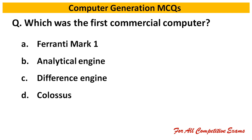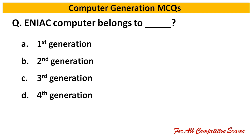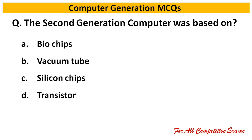Next question: Which was the first commercial computer? Right answer is Ferranti Mark 1. Next question: ENIAC computer belongs to dash generation. Right answer is first generation.